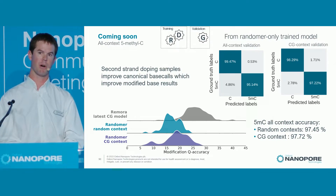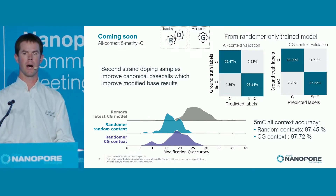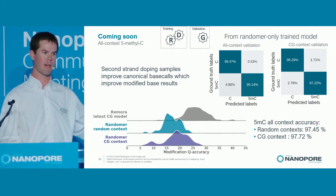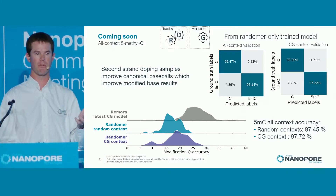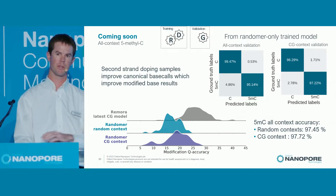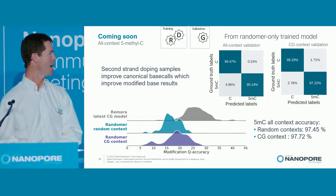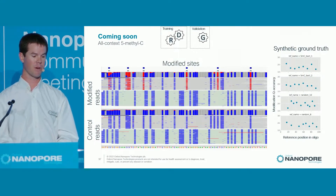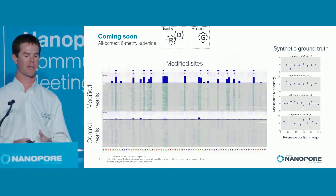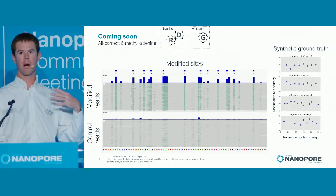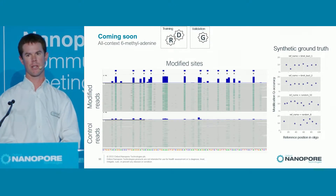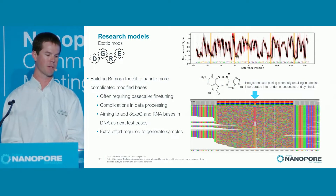The 5-MC all-context model is coming very, very soon — we're seeing very good accuracies and just need to get this out on the latest base callers. For the 5-HMC model, we included enzymatic 5-HMC model data to improve accuracy, and we're working on the same type of thing for 5-MC calls using second-strand doping samples. We're seeing really good accuracy, and 6-MA is coming soon — we've produced 60 all-context samples and are moving forward on 6-MA with hopes to release it as we ramp up production.